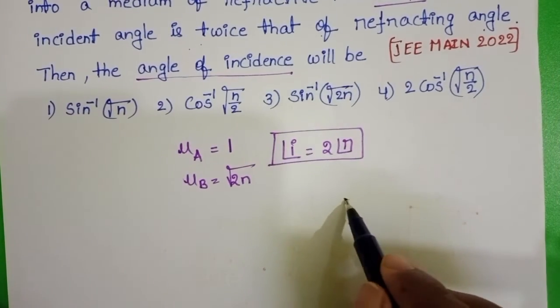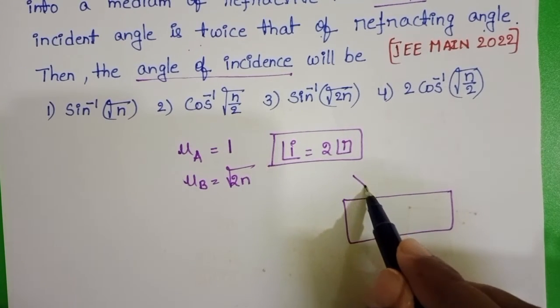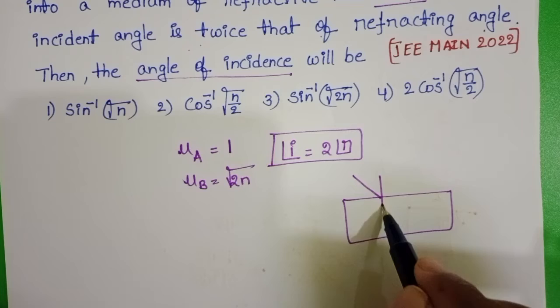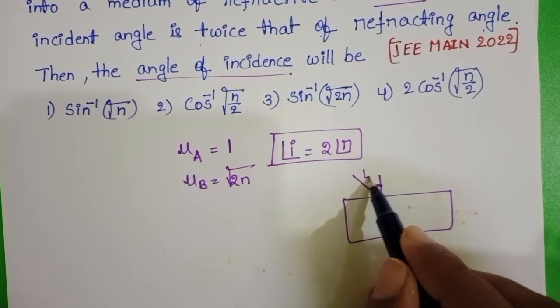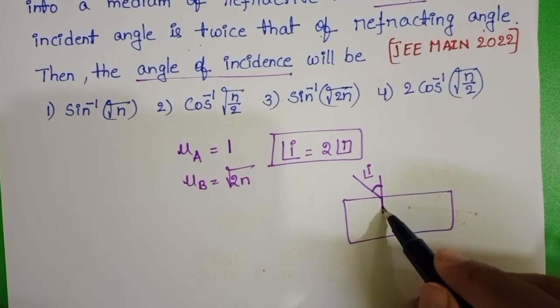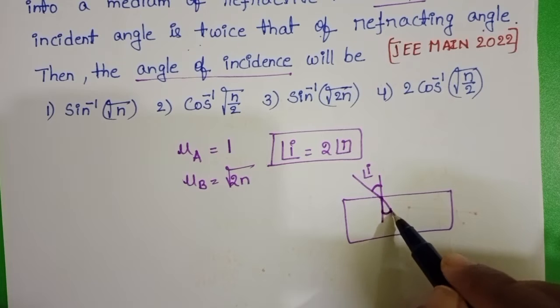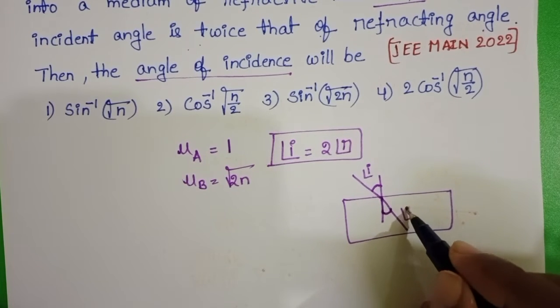When a light ray travels from rarer medium to denser medium, angle of incidence is i. This light ray refracts at the interface. Let the angle of refraction be r.